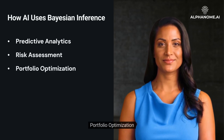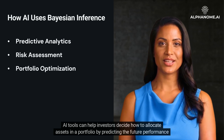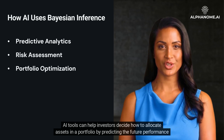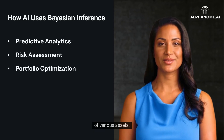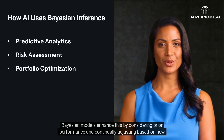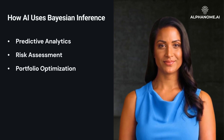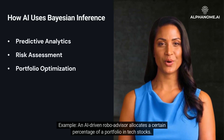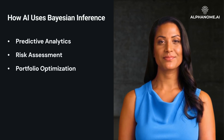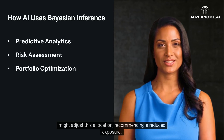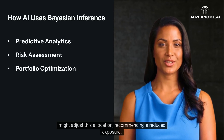AI tools can help investors decide how to allocate assets in a portfolio by predicting the future performance of various assets. Bayesian models enhance this by considering prior performance and continually adjusting based on new data. For example, an AI-driven robo-advisor allocates a certain percentage of a portfolio in tech stocks. However, with new data showing potential regulatory challenges for tech companies, the Bayesian model might adjust this allocation, recommending a reduced exposure.